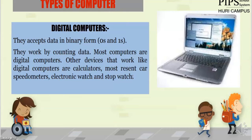Examples of digital computers include electronic watches and stopwatches. We have an analog watch and we have an electronic digital watch. Digital computers show time in digit form — for example, 2:00 PM. Car speedometers can also appear in digital form.